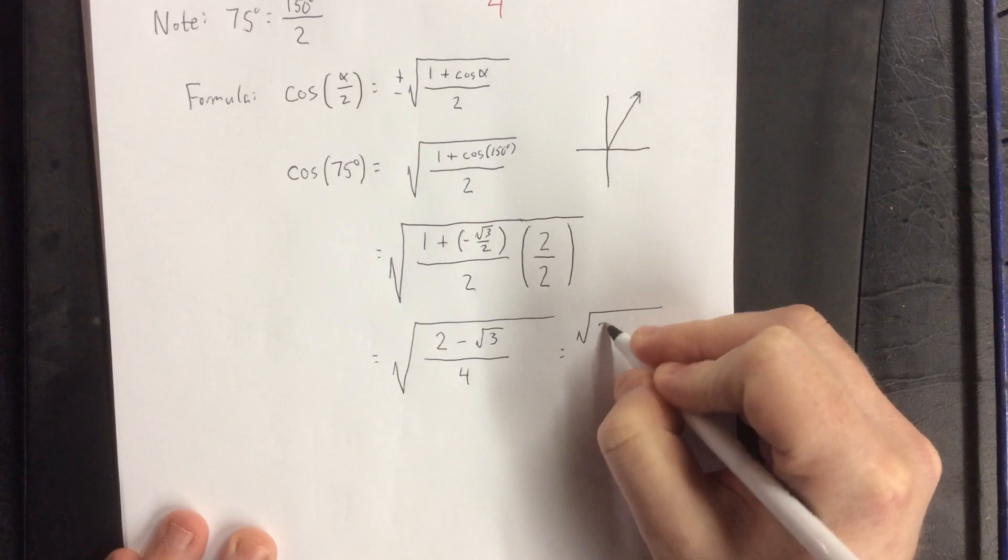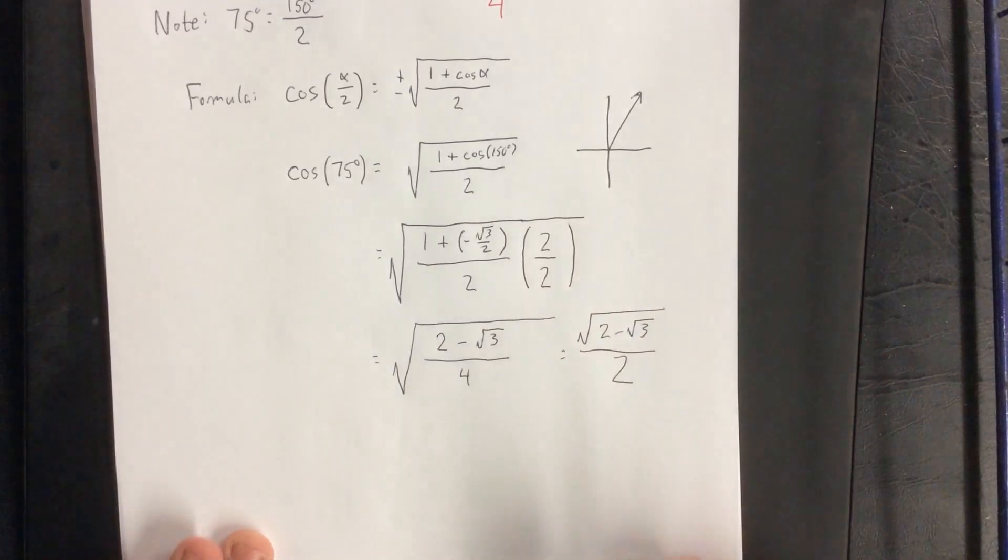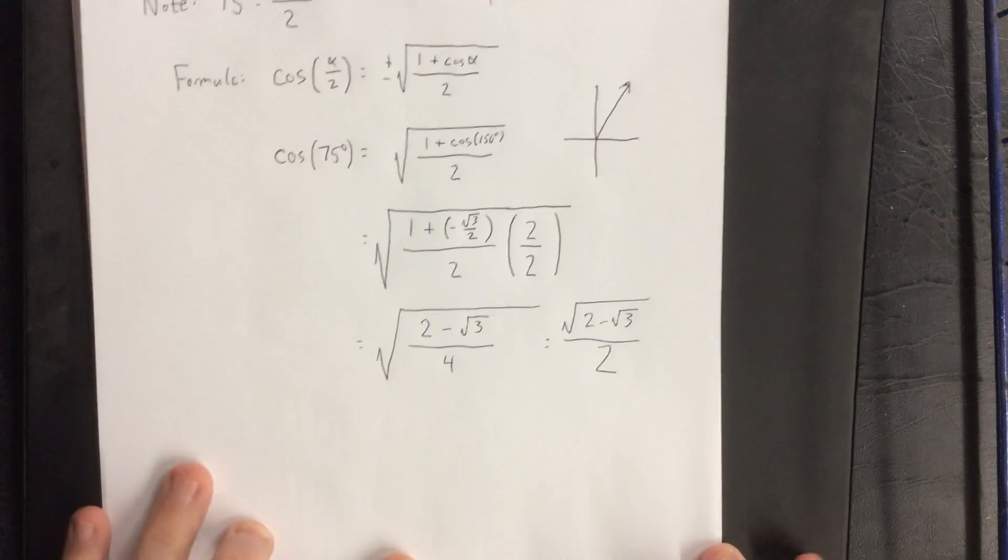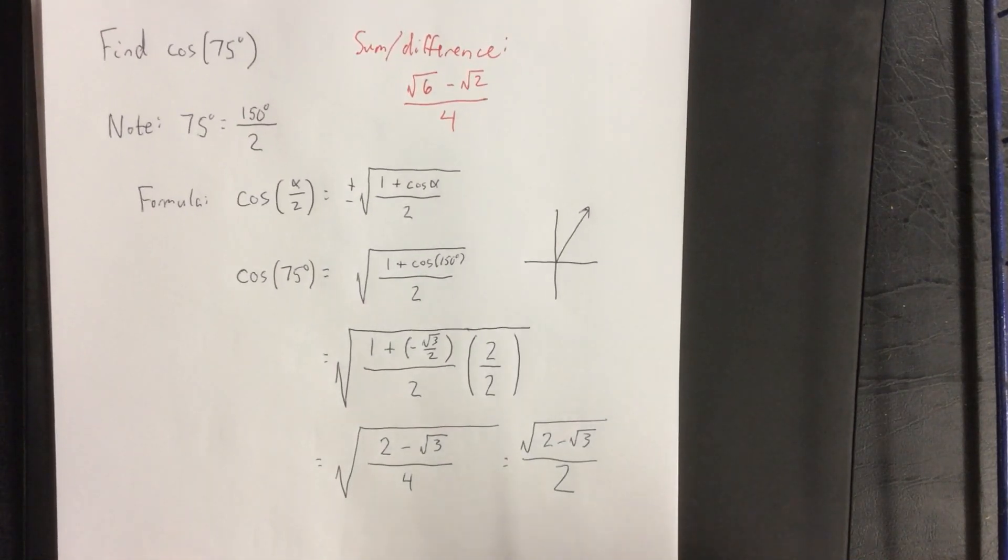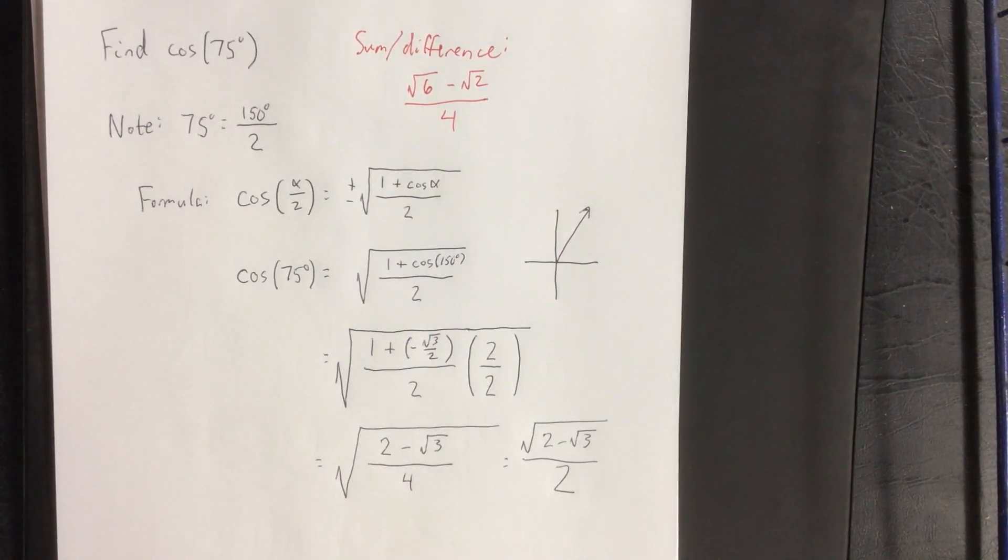The only further simplification that I want to do is in the denominator by taking the square root of 4. Now compare this answer, the square root of 2 minus root 3 all over 2, with the answer that we got the other method. These two numbers look basically nothing alike.